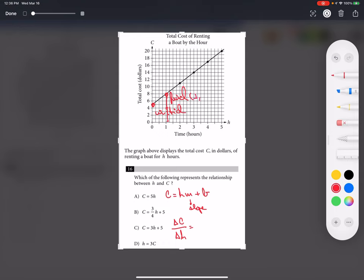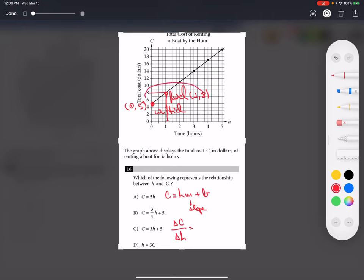My final point: X is one, Y is eight. My initial point: X is zero, Y is five. So let's calculate: eight minus five over one minus zero equals three over one. This is my slope.